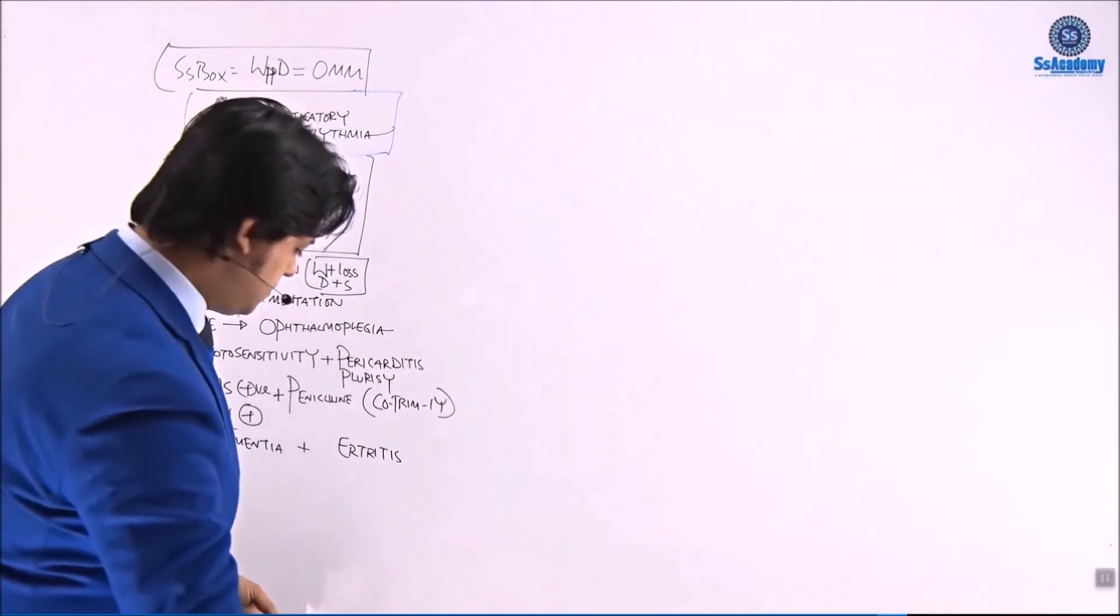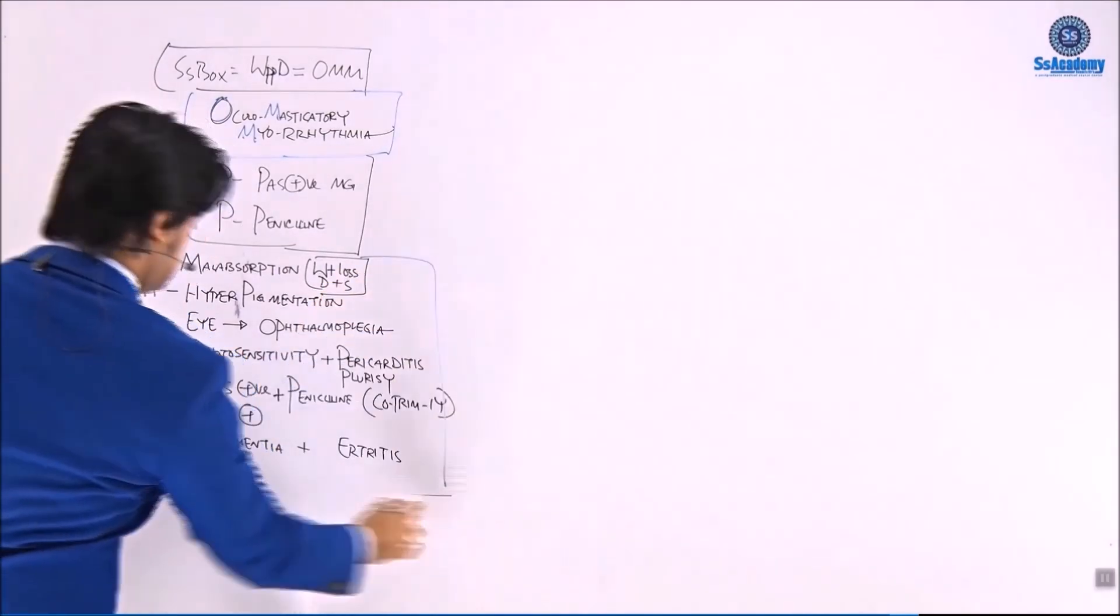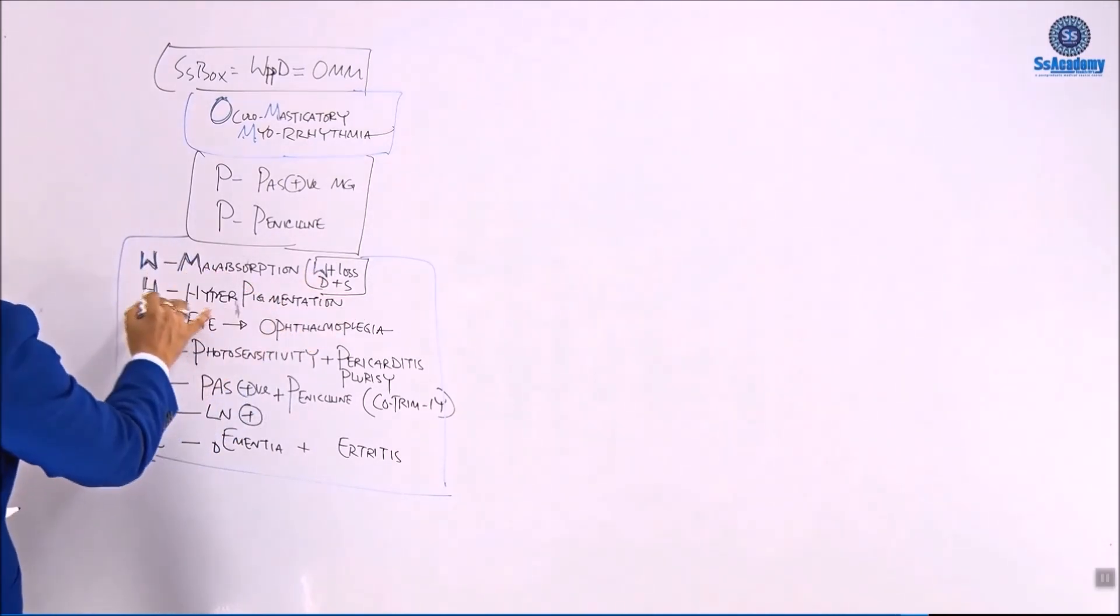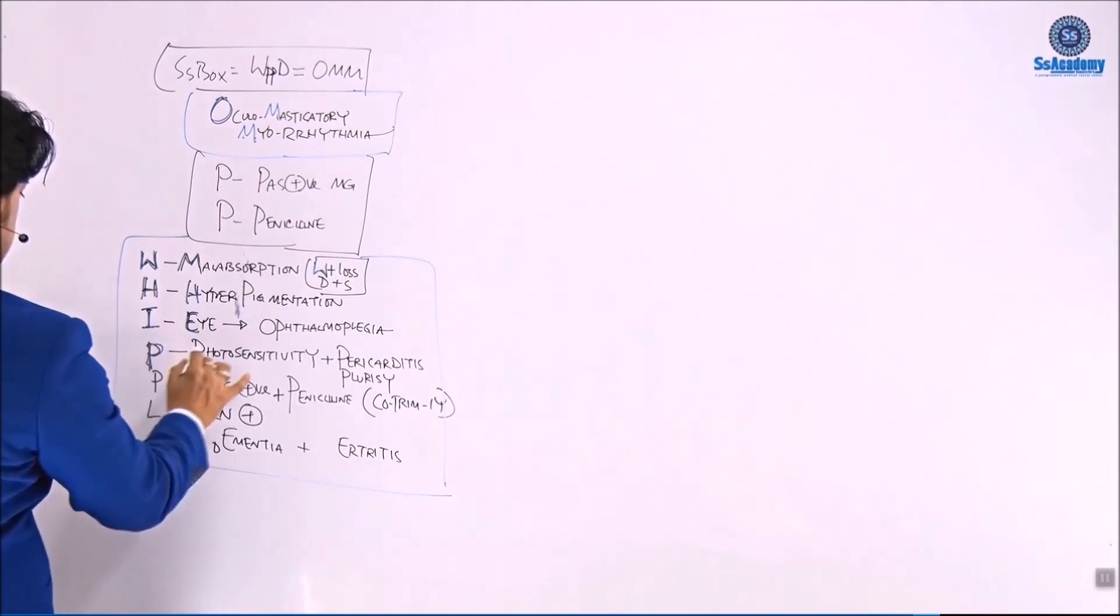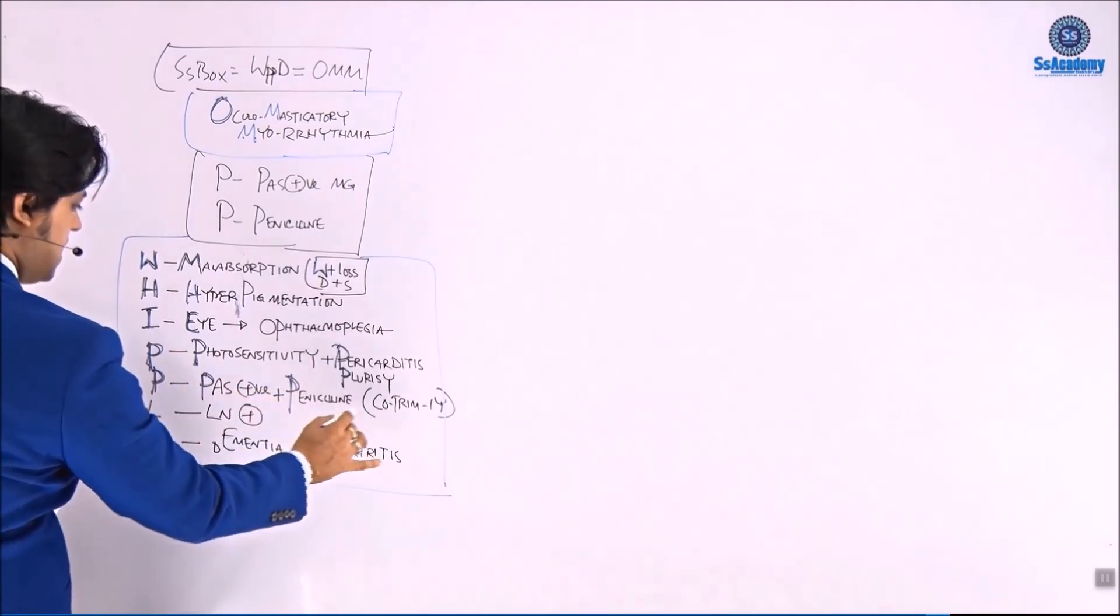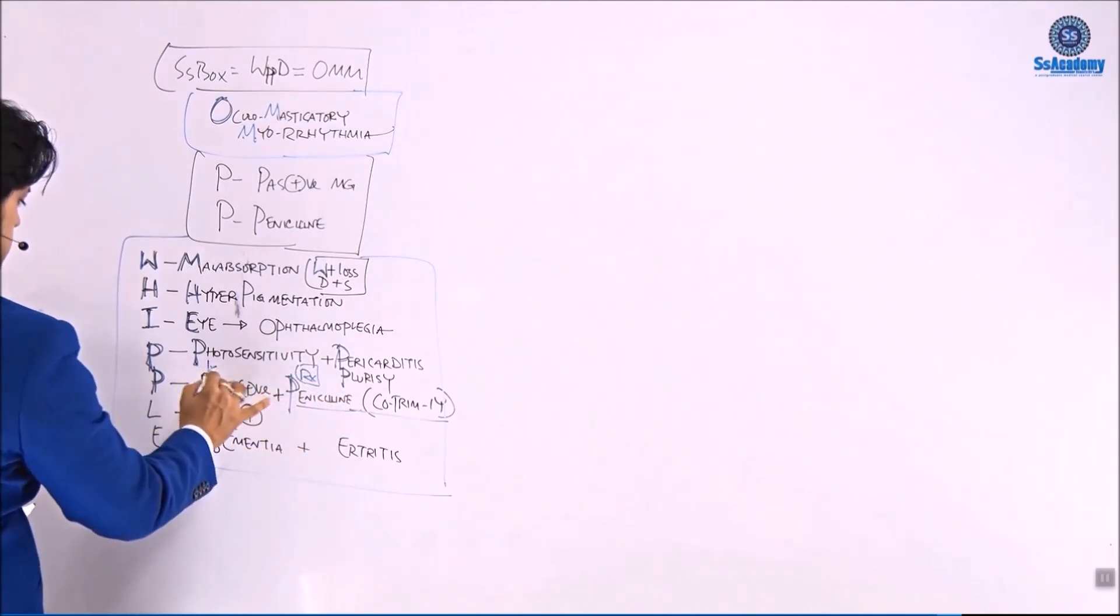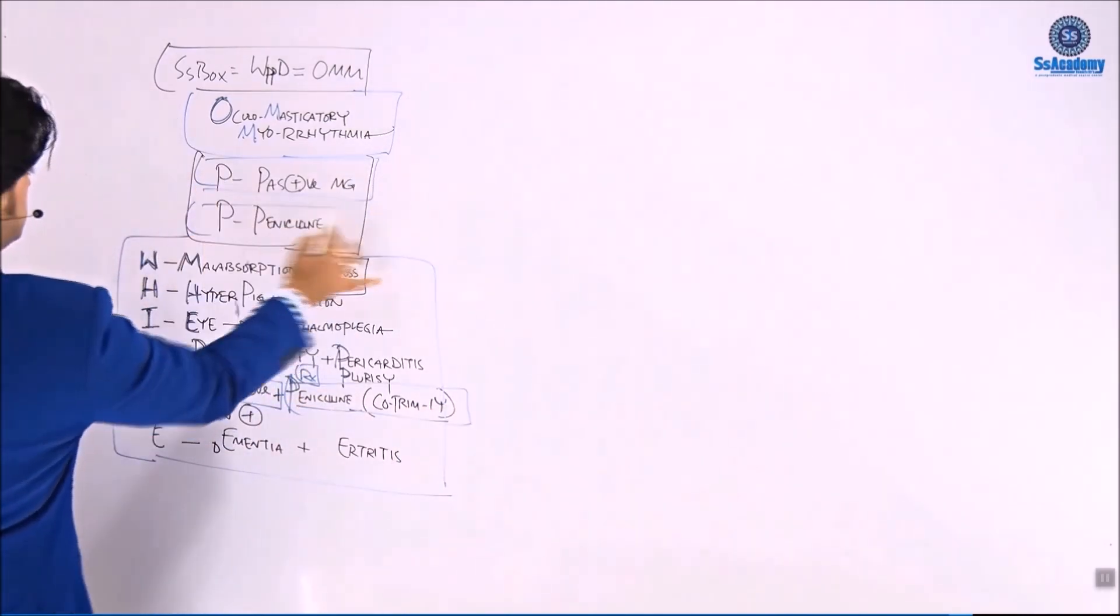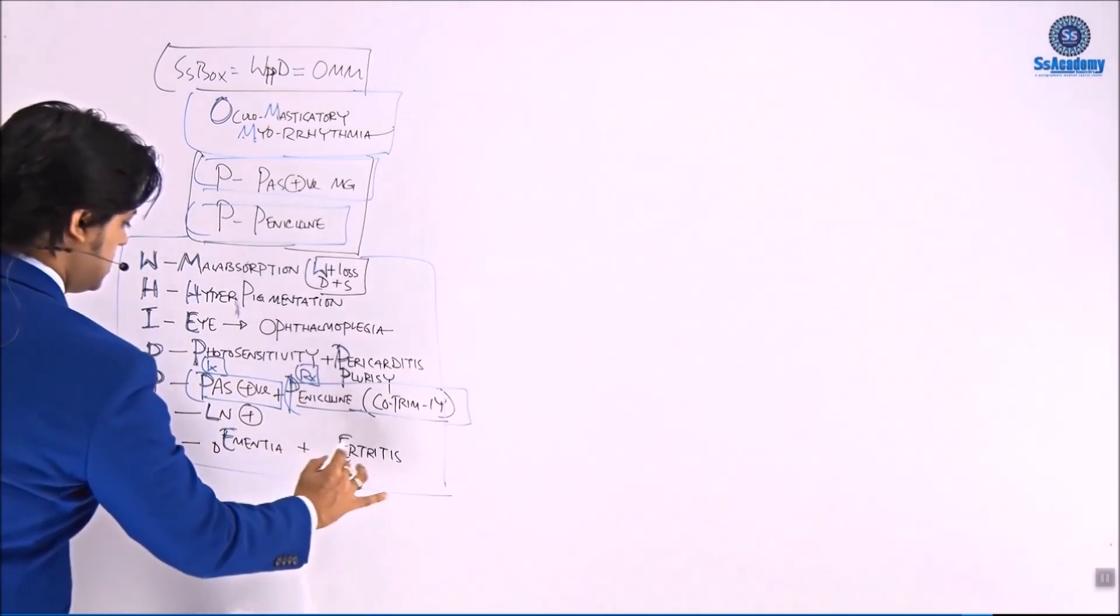And S, and E stands for arthritis. A little bit more discussion will be helpful. This is the box for Whipple's disease: W for weight loss or malabsorption, H for hyperpigmentation, I for eye ophthalmoplegia, P for photosensitivity, P for pericarditis, P for pleurisy, P for PAS-positive, P for penicillin followed by co-trimoxazole, which is a treatment box and diagnostic box. L for lymphadenopathy, and E for dementia and arthritis.